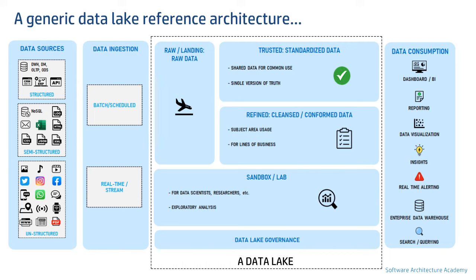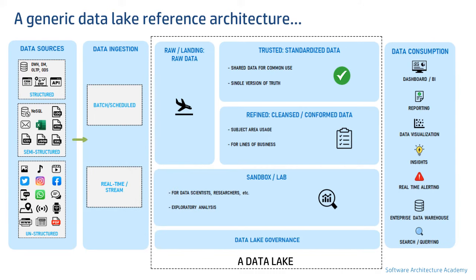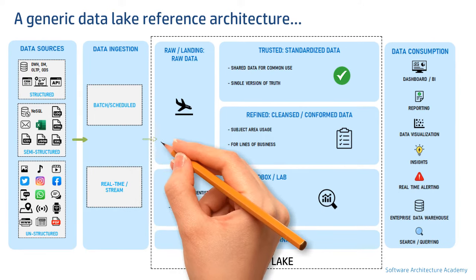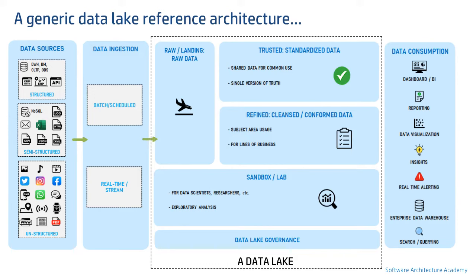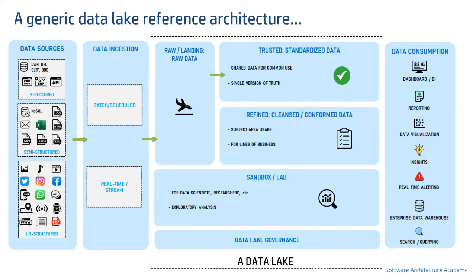Now let's discuss possible data flows. The ingestion layer, as the name suggests, ingests data from sources into the landing or raw zone. Data from the raw zone cannot be consumed by end users directly — meaning used by applications in the consumption layer. Data can then be picked up by the trusted zone, where enterprise-wide use cases are catered to.